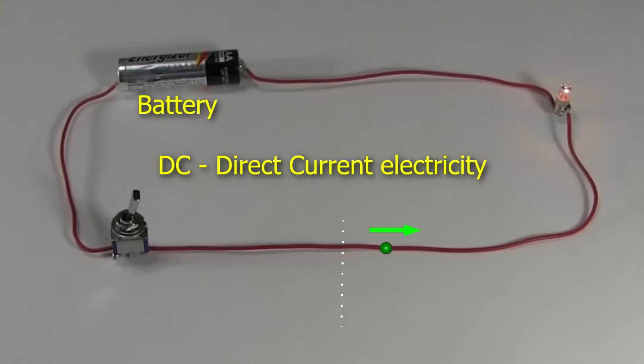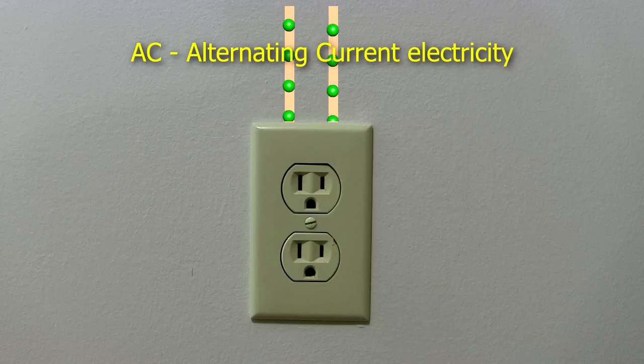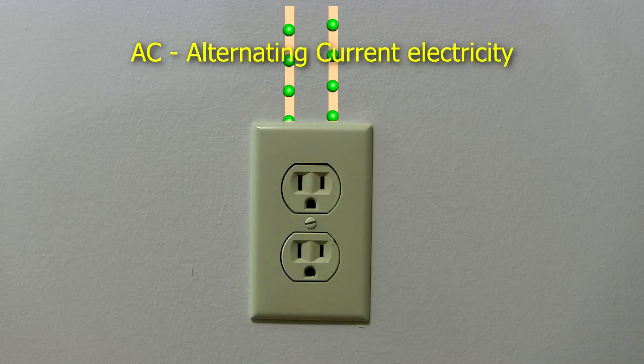Electricity from a battery is direct current electricity. The electrons go around in one direction. Electricity you get from your wall socket is alternating current electricity. The electrons go one way, stop, go back the other way, stop, and go the other way again. Even here though, the electrons are moving slow, like we've been talking about, even though the effect, the electricity, moves very fast.